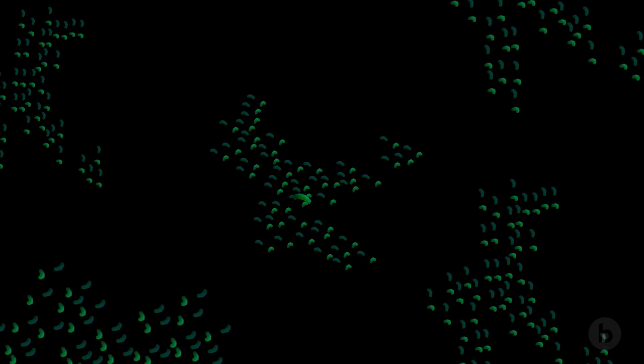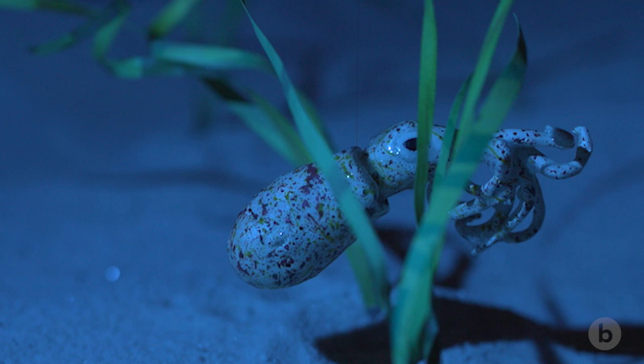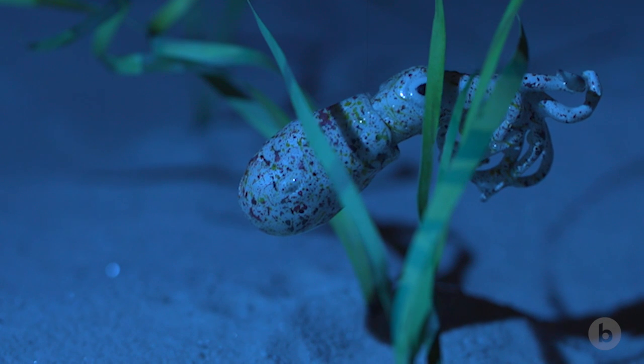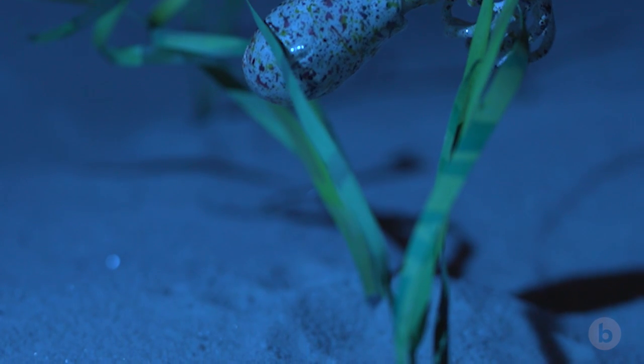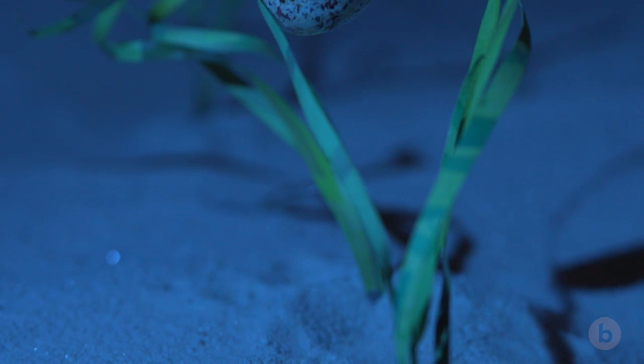Mysteriously, these obstacles seem to prevent everything but Vibrio fischeri from setting up shop in the light organ, and this is something that we're really trying to understand. That's one of the amazing things about the symbiosis. Finding Vibrio fischeri is like finding a needle in a haystack.